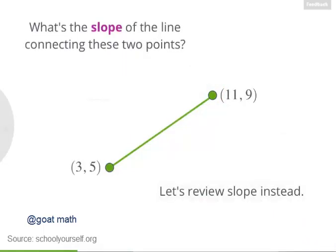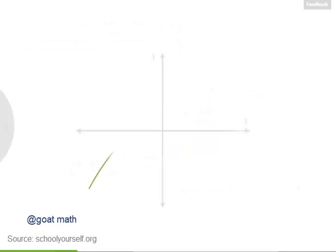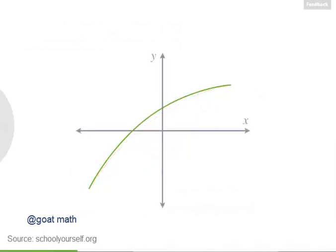Now let's move on to tangent lines. Here's a function, and let's pick any point on the function, like this point over here. Even though this function is curved and is not a straight line, you can still think of the function as having a slope at this point.